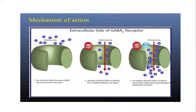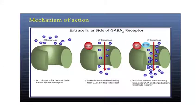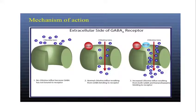The important subunits are alpha-1, alpha-2, alpha-3, and alpha-5, which have histidine residues — these are important for the attachment of benzodiazepines. The other subunits, alpha-4 and alpha-6, have arginine residues, and arginine residue is not favorable for benzodiazepine attachment, so those subunits are not favorable.